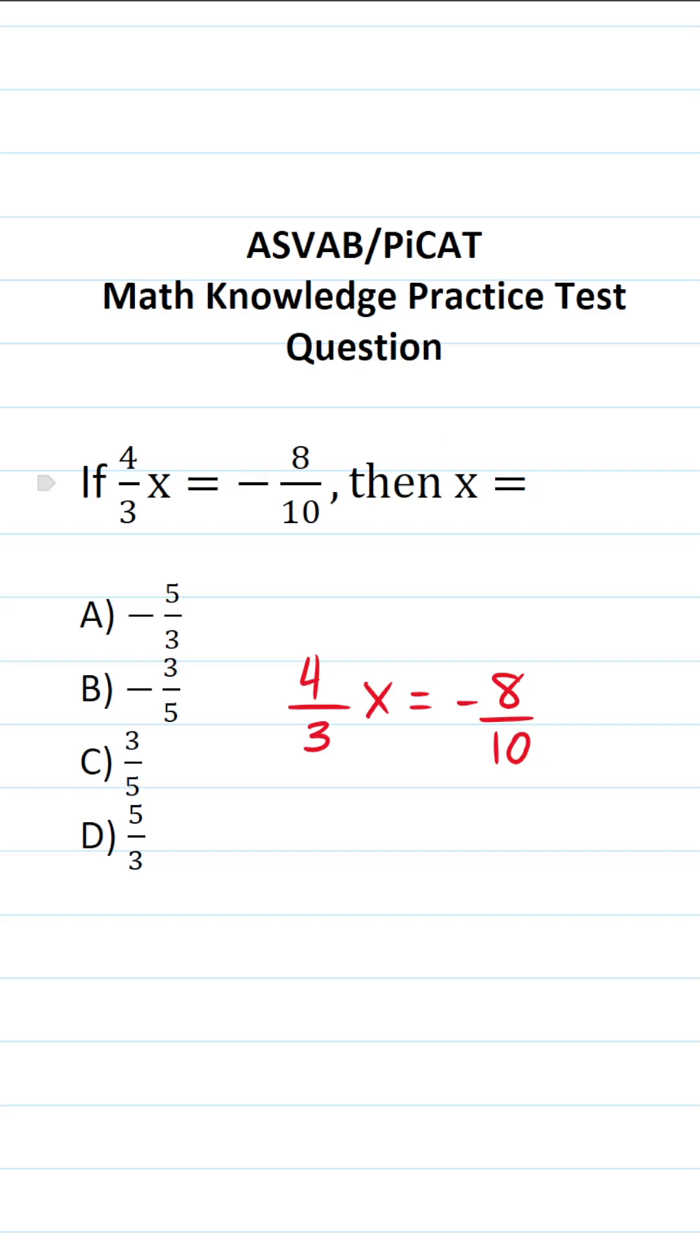In this case, we want to solve this equation for x. That is to say, we want to get x equal to something by itself. And in order to do that, we have to clear this four thirds in front of x.